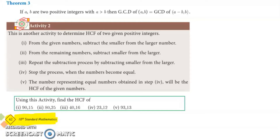Theorem 3 states that if a and b are two positive integers with a greater than b, then the GCD of a, b is equal to the GCD of a minus b, b.